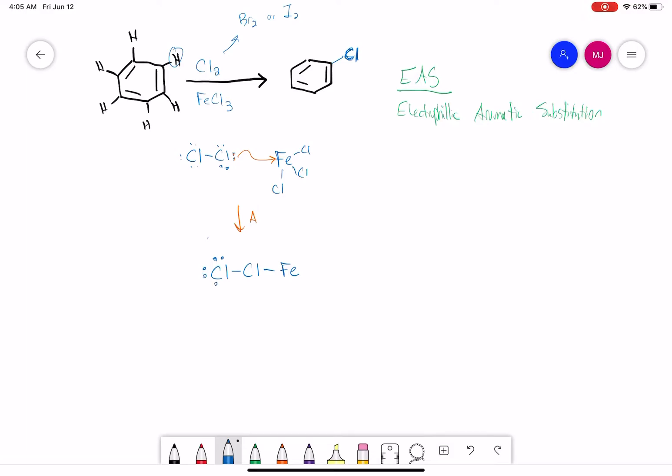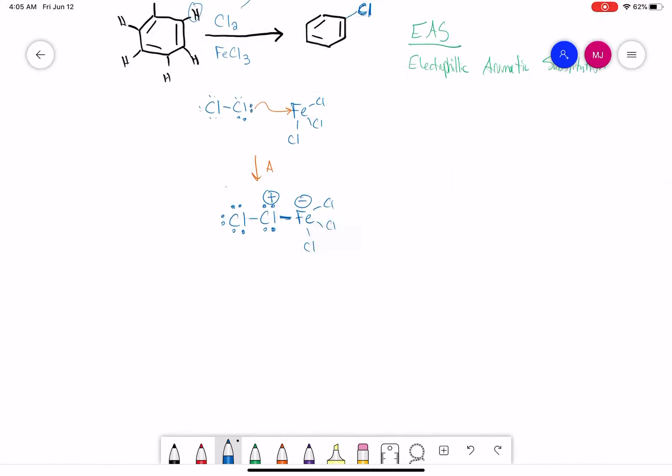The chlorine on the left still has three lone pairs. The chlorine in the middle now only has two lone pairs. That lone pair became this bond. And then our iron is still connected to three other chlorines. So the chlorine in the middle has a positive charge, and the iron has a negative charge.